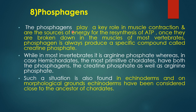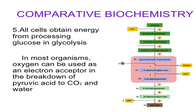Next is phosphogens. Phosphogens play a key role in muscle contraction and are the source of energy for the resynthesis of ATP. In most vertebrates, the phosphogen is a specific compound called creatine phosphate, while in most invertebrates it is arginine phosphate. In hemichordates — the most primitive chordates — both creatine phosphate and arginine phosphate are present. Such a situation is also found in echinoderms, which on morphological grounds have been considered close to the ancestor of chordates. In most organisms, cells obtain energy by processing glucose in glycolysis, and oxygen is used as an electron acceptor in the breakdown of pyruvic acid to carbon dioxide and water.